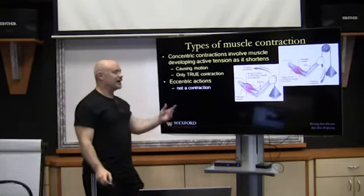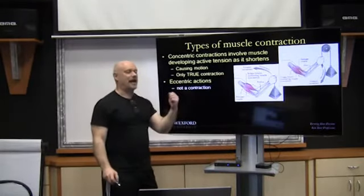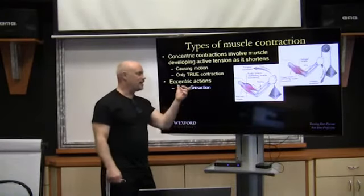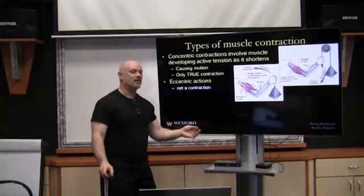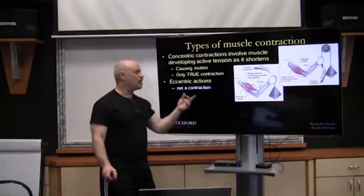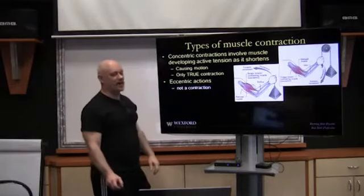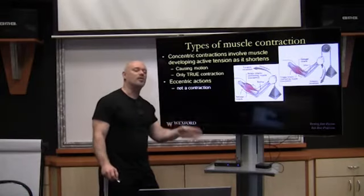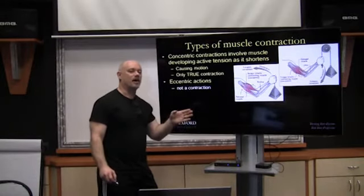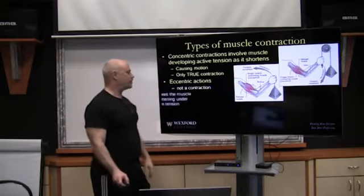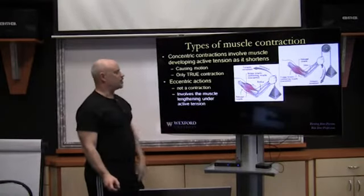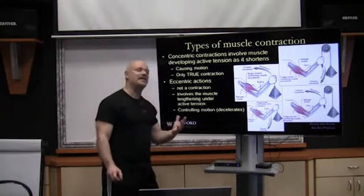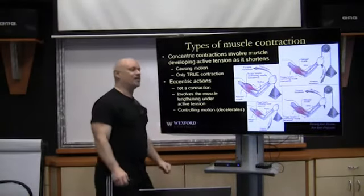Eccentric actions — it's not a contraction, it's an action, a lengthening action. Remember, contraction means shortening. Eccentric means lengthening, so they're two different terminologies, and we want to use eccentric action, not eccentric contraction. I realize the book says contraction — it's an old term — but we're going to use the terminology of muscle actions. It involves the muscle lengthening under active tension. It's a controlling motion and helps to decelerate any types of motion, even in the bench press when bringing the weight down to the chest.